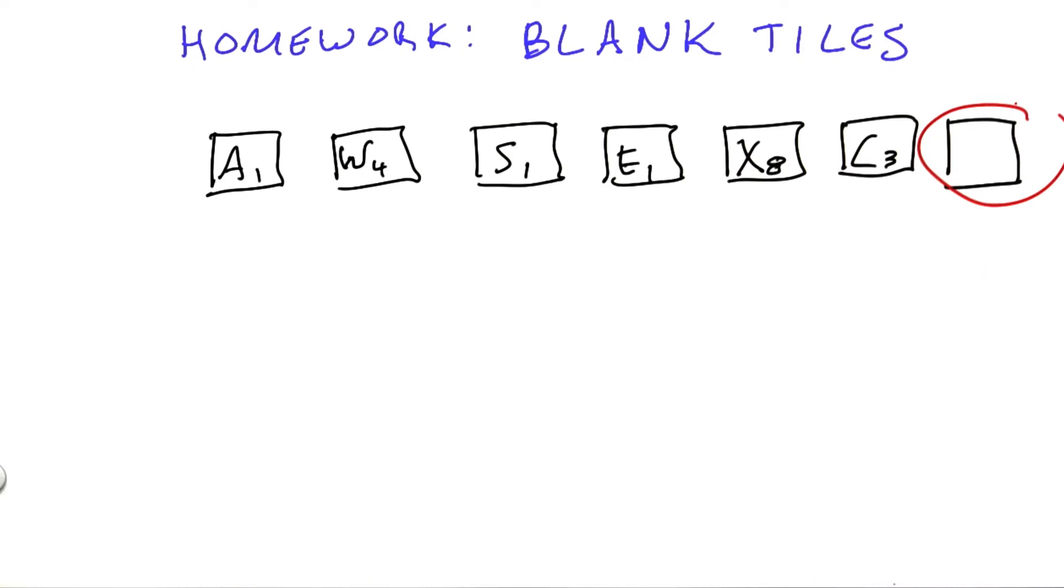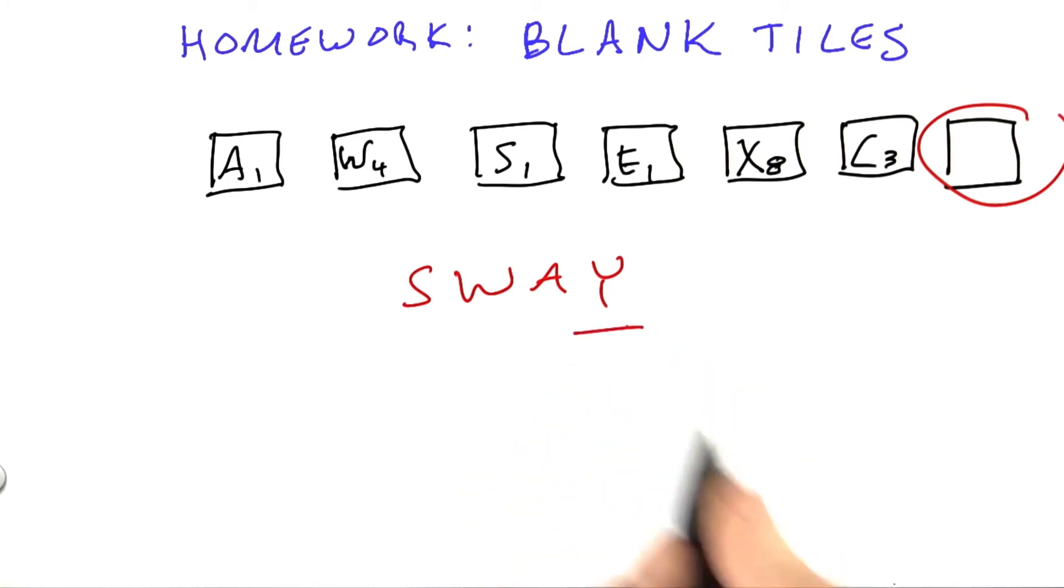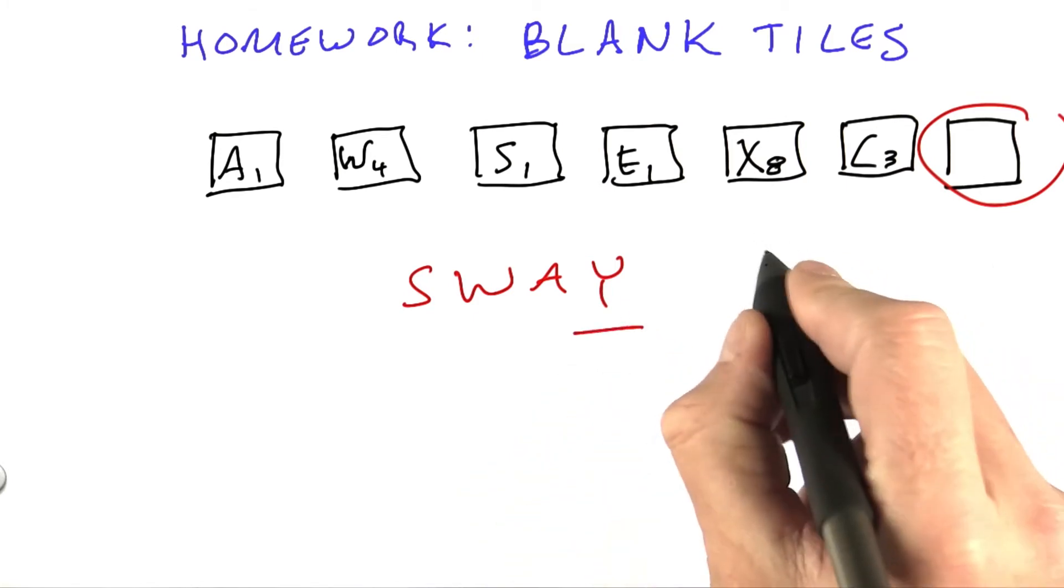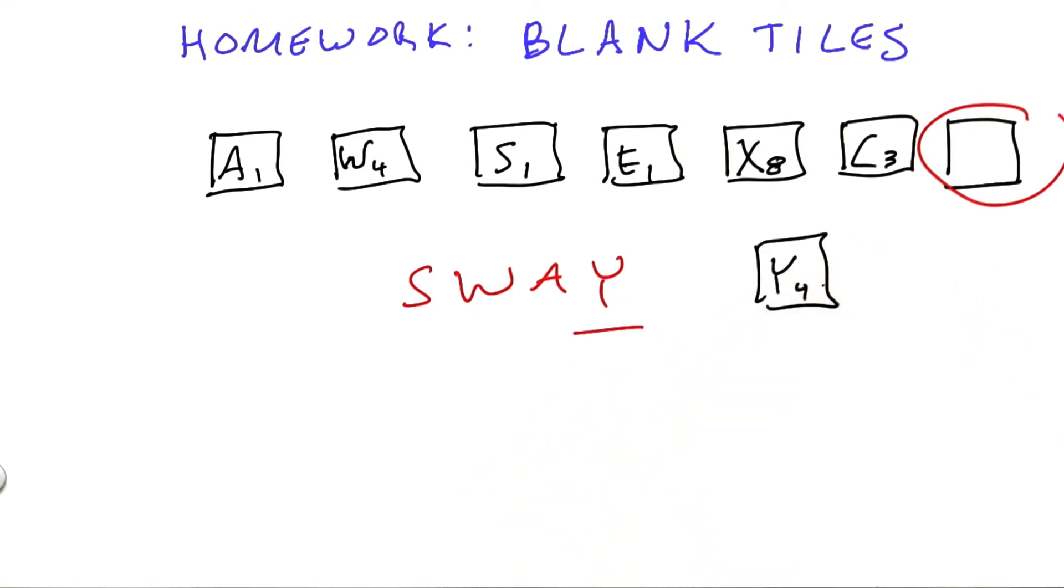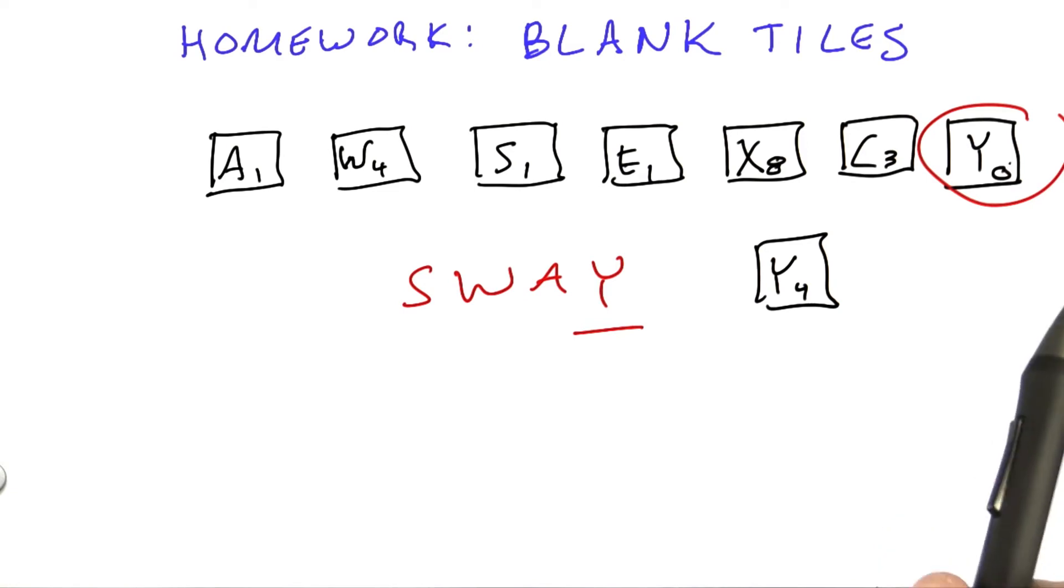Suppose we wanted to play the word sway. We could use the blank tile to form a y, but if we had a real y tile, that would be worth 4 points, whereas if we have a blank y tile, that's worth 0 points in terms of the letter score. So we can't just replace it as is. We have to keep track of the scoring.